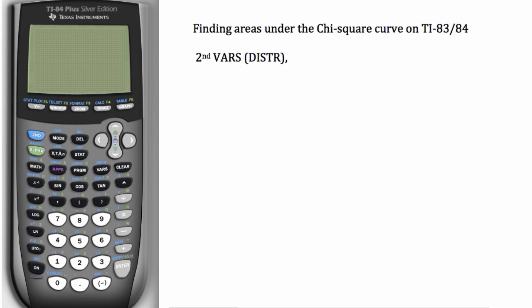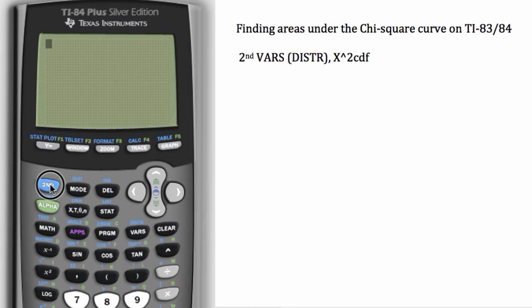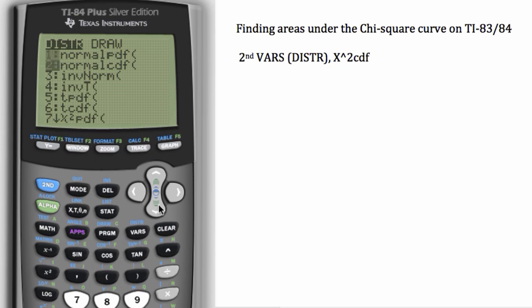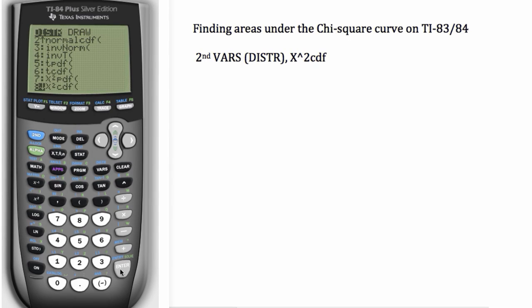And then we're going to find the chi-squared CDF. C stands for cumulative, cumulative distribution function. So we'll go to second VARS and scroll down and find chi-squared CDF and hit number 8 or enter.